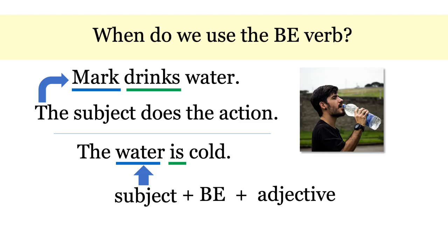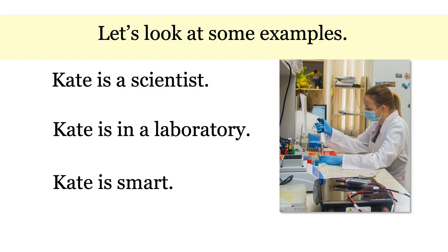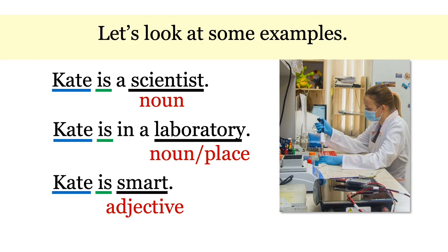Let's look at some examples. Kate is a scientist. Kate is in a laboratory. Kate is smart. In the first sentence, Kate is the subject. IS is the BE verb that connects the subject to a noun — scientist — that tells more about Kate. In the second sentence, Kate is the subject. IS connects Kate to the rest of the sentence; here it's a noun, a place. In the third sentence, again, Kate is the subject. IS is the BE verb that connects Kate to the rest of the information — here, an adjective that describes her. Kate is smart.